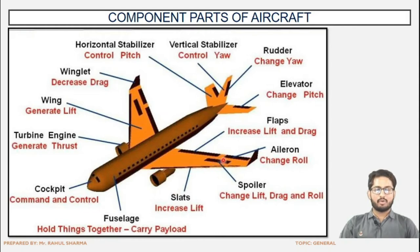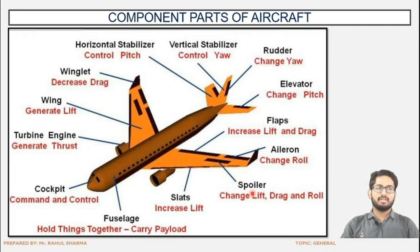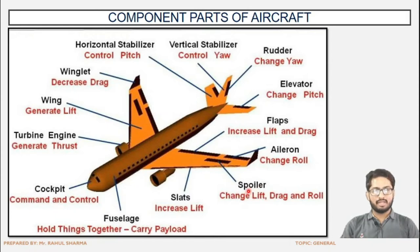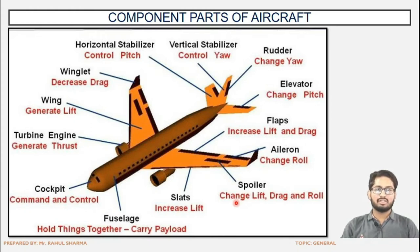Next are the spoilers. A spoiler, as the name suggests, comes into picture when excessive thrust has to be reduced. If there is excessive thrust or energy which is not needed by the aircraft, that is dissipated through the spoilers. Also, spoilers can change the alignment in all three directions: vertically, horizontally, or sideways.